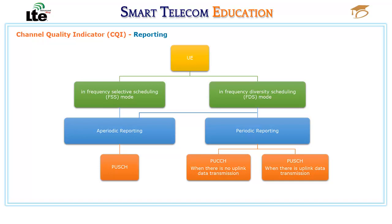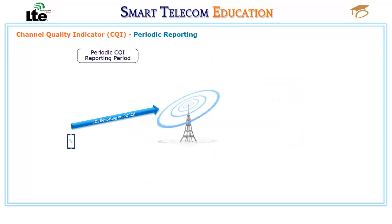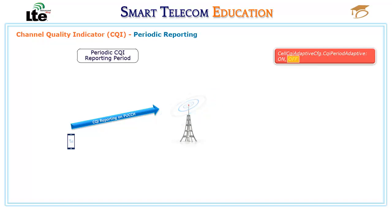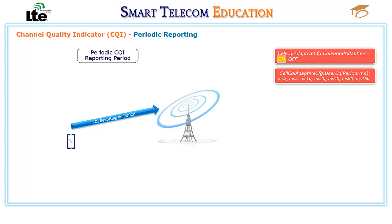If the periodic CQI reporting time conflicts with the aperiodic CQI reporting time, only aperiodic CQI reporting is triggered. The periodic CQI reporting interval is controlled by the CQI period adaptive switch parameter. If this parameter is set to OFF, the reporting interval is a fixed value specified by the user CQI period parameter. If the parameter is set to ON, the reporting interval is adjusted based on the PUSCH load.